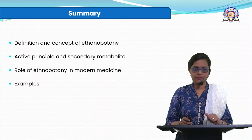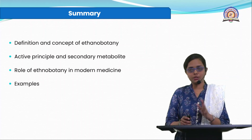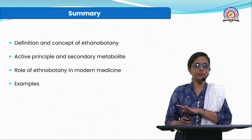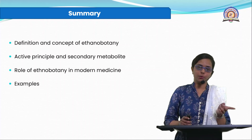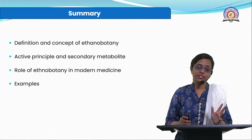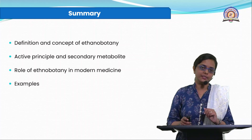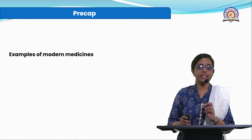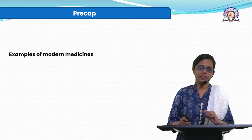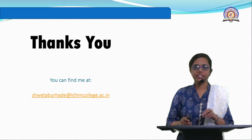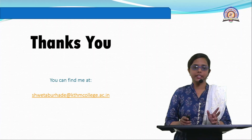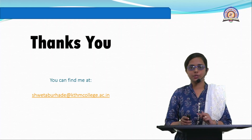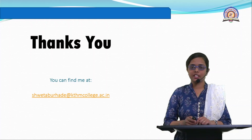In summary, we have studied the definition and basic concept of ethnobotany, what is an active principle and secondary metabolites, and the connection between herbal medicine and modern medicine. We studied the role of ethnobotany in modern medicine with two examples — Artemisia annua and Rauwolfia serpentina. In the next lecture, we will study two more examples and applications. Thank you. For queries, contact me at shwetaburhade@kthmcollege.ac.in or through our Google Classroom for the certificate course in ethnobotany.